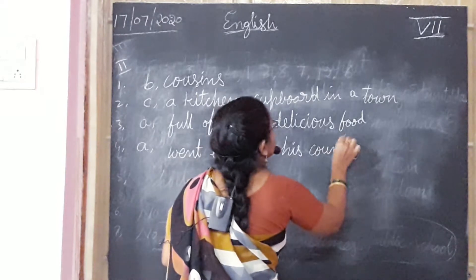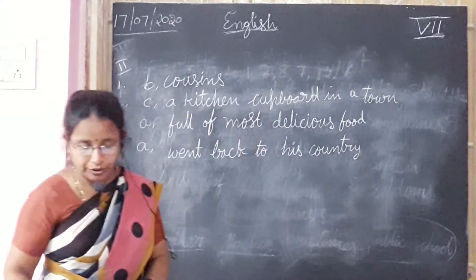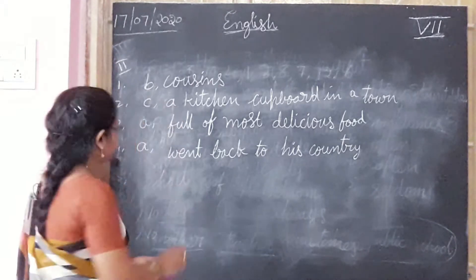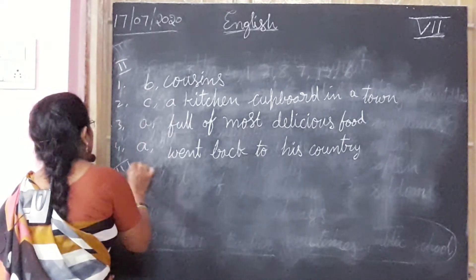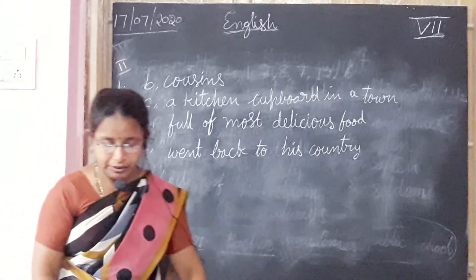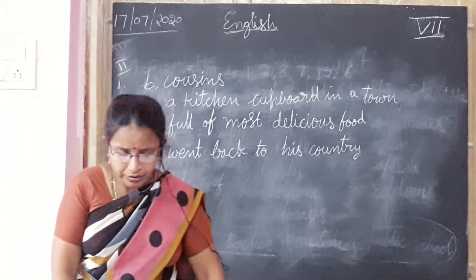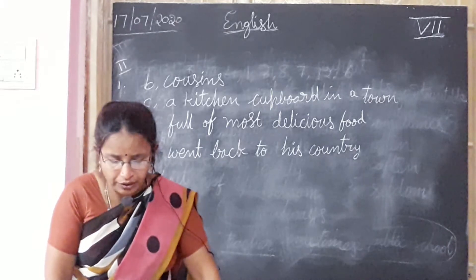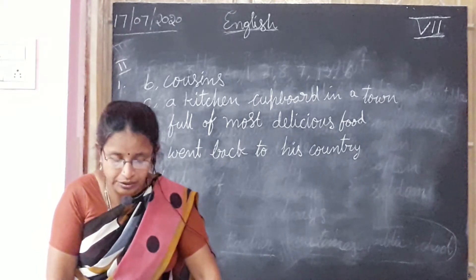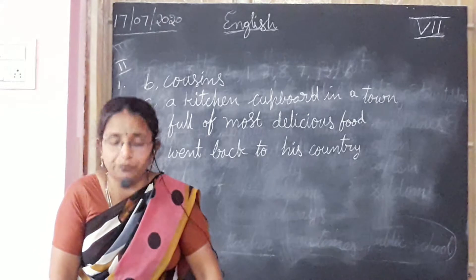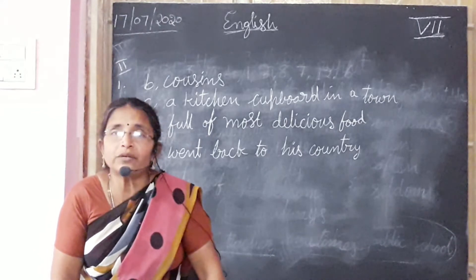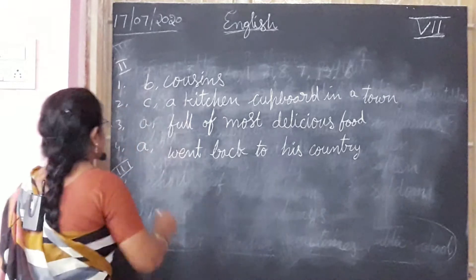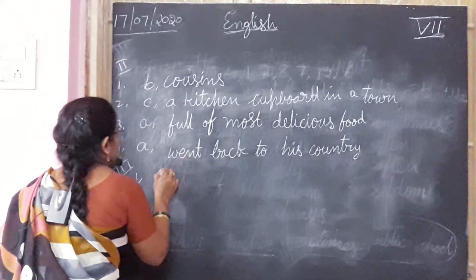Children, note and write neatly in your textbooks. Now come to third roman — true or false are given for you. First one: the country mouse lives in a town. The country mouse lives in a country, not in the town. So the statement is wrong. First one is false.